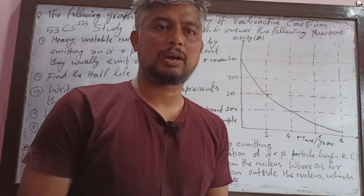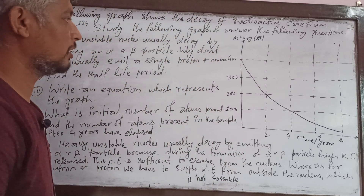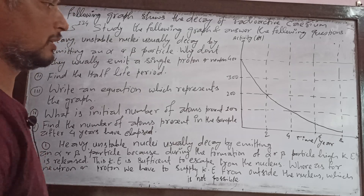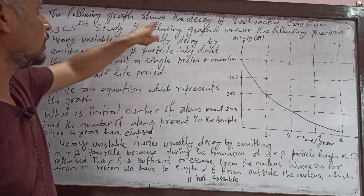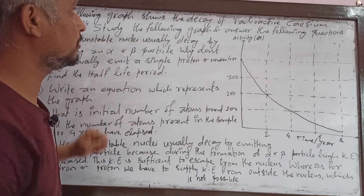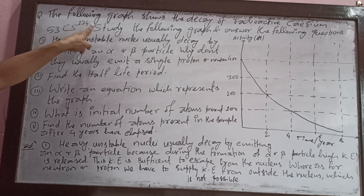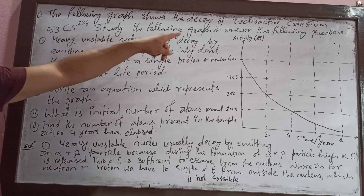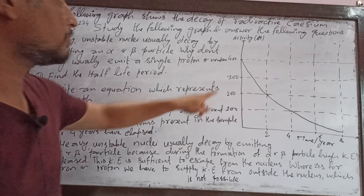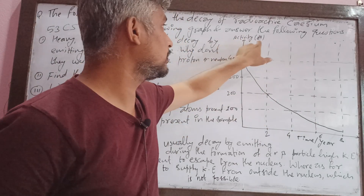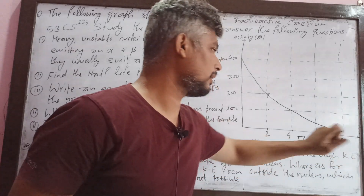Good afternoon students. The following graph shows the decay of radioactive cesium-53 CS-134. Study the following graph and answer the following questions. The graph shows activity in Becquerel on the y-axis and time in years on the x-axis.